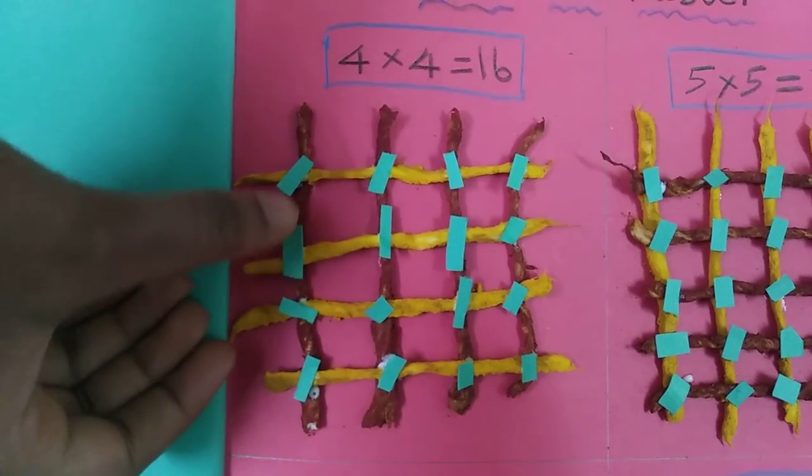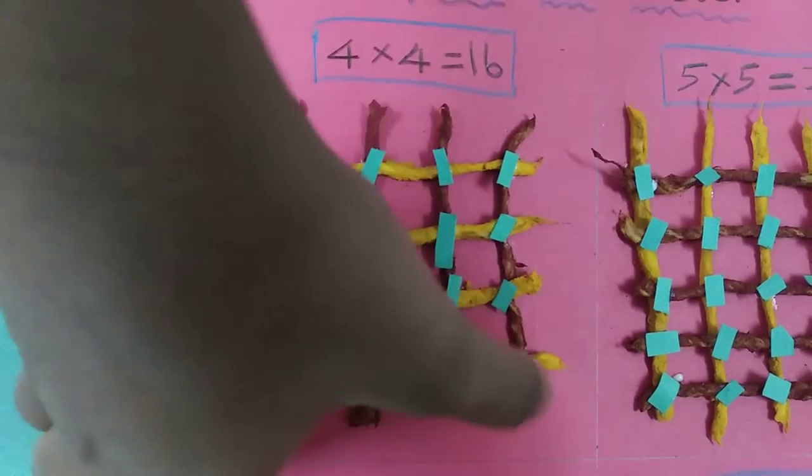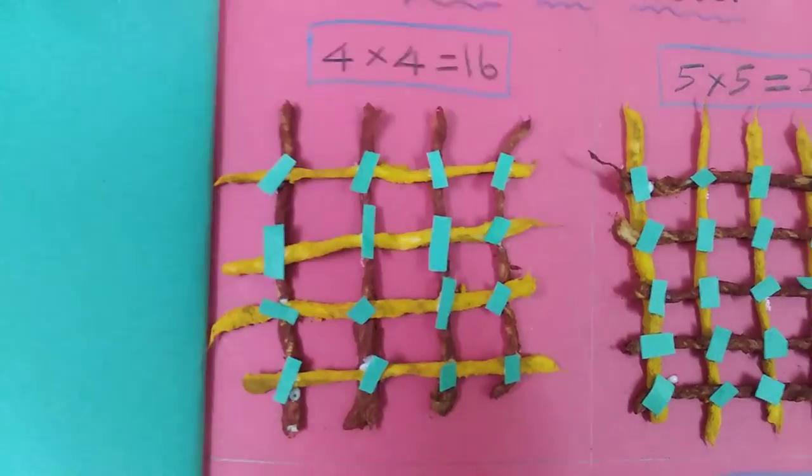1, 2, 3, 4, 5, 6, 7, 8, 9, 10, 11, 12, 13, 14, 15, 16. Easy.